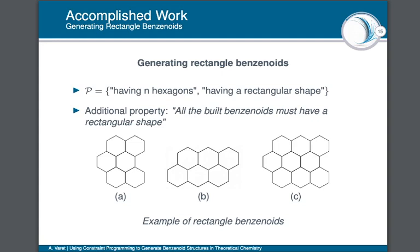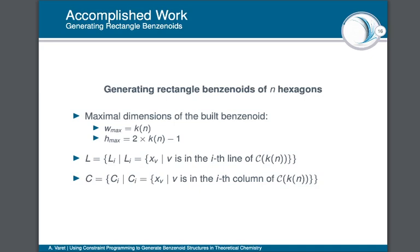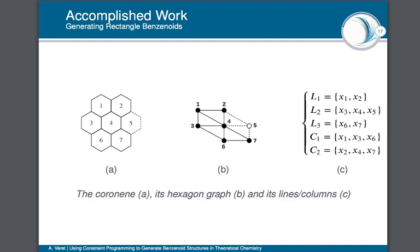The second module, more interesting, is used to generate benzenoids having a rectangular shape — the figure shows some examples of rectangular benzenoids we are able to generate. Given the number of hexagons N required in the general model, we denote Wmax = K(N) and Hmax = 2*K(N) - 1, corresponding to the maximal dimensions. We also consider two sets of vertices L and C corresponding to the lines and columns of the hexagon graph of the coronenoid of size K(N). For example, looking at the coronenoid of size 2: figure A shows the coronenoid, figure B its hexagon graph, and figure C its lines and columns.